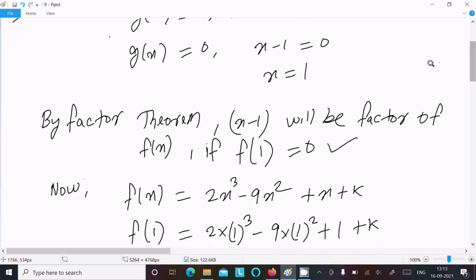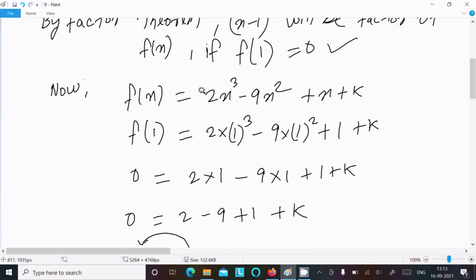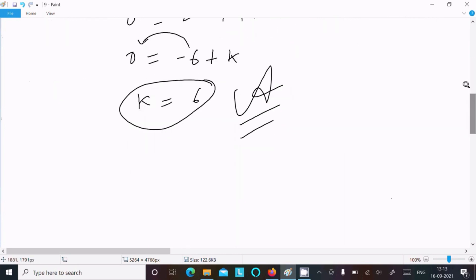So here f(1), x value is now 1 equal to 0. So f(x) write here, put 1, f(1) equal to 0. After calculating here k equal to 6 that come.